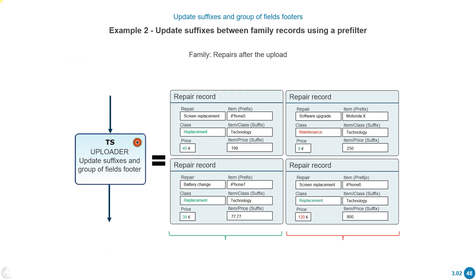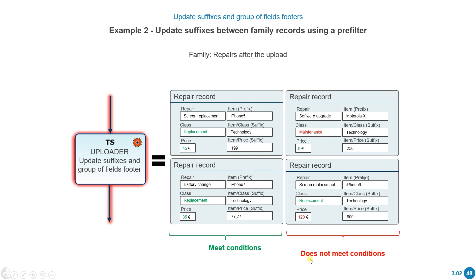Once triggered, the suffixes of all records meeting the conditions are updated. The flow went through this uploader system task and updated all elements that met the conditions. The ones that didn't meet the required conditions were not updated.